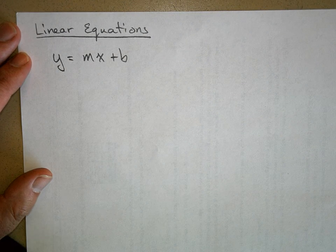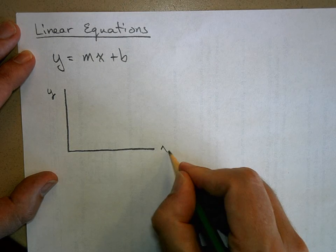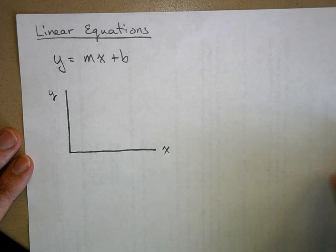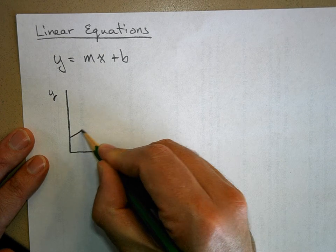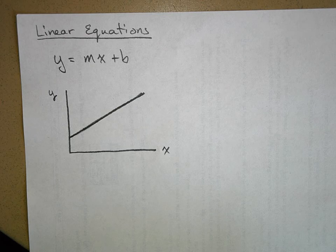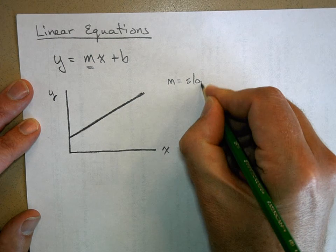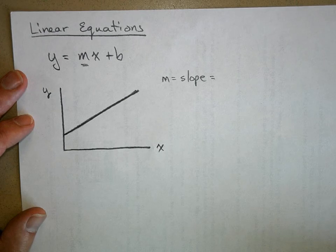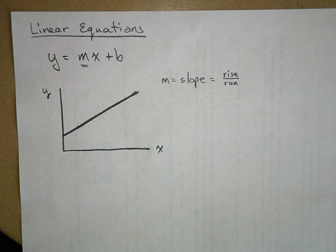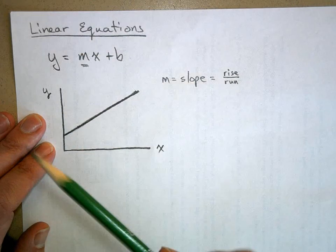This right here represents the vertical axis — we usually call that Y — and the horizontal axis we call X. Now you can see why I want you to have graph paper notebooks, because we're graphing today. If you have Y equals MX plus B, this represents a straight line. What did the M stand for? Slope, right. M was equal to the slope, and one of our definitions for slope is the rise over the run — it's the rate at which Y is changing with X.